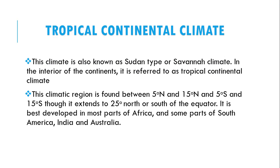This tropical climate is also known as the Sudan type or savannah climate. It is found in the interior of the continents and is referred to as the tropical continental climate. This climatic region is mainly found between five degrees north and fifteen degrees north, and five degrees south and fifteen degrees south, extending to twenty-five degrees north or south of the equator. It is mainly developed in most parts of Africa and some parts of South America, India, and Australia.